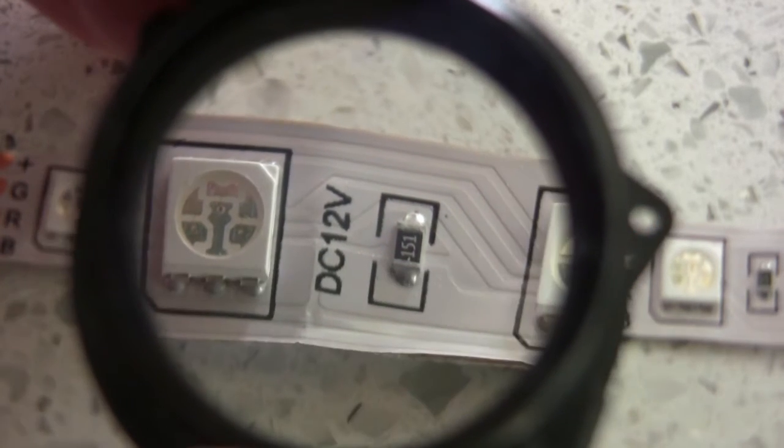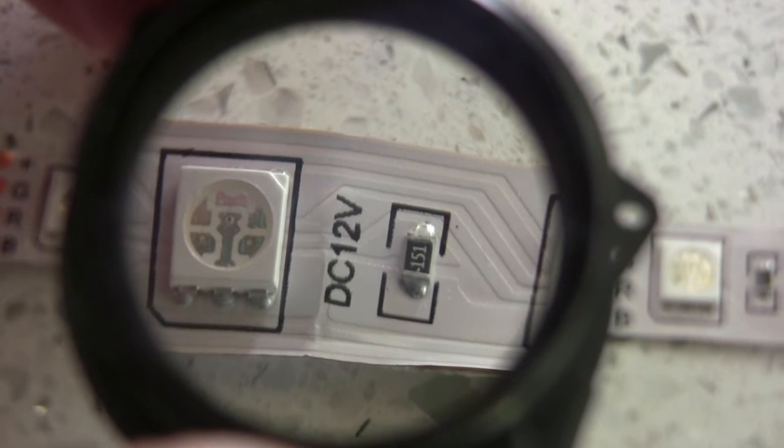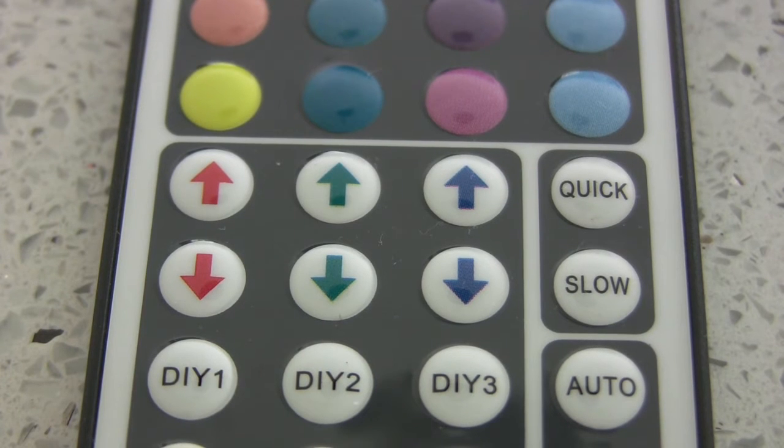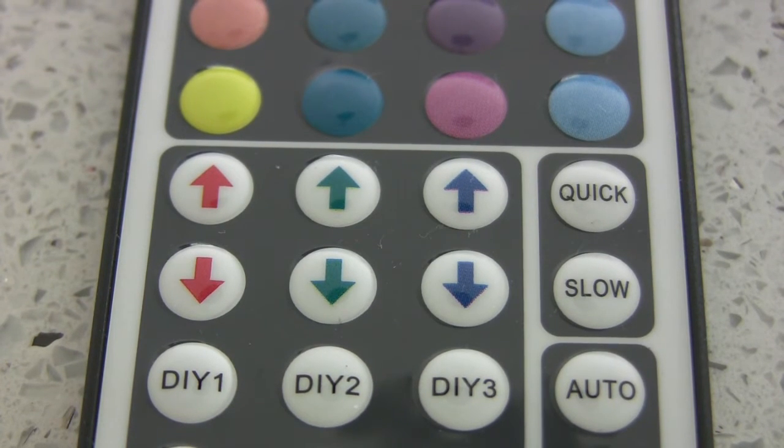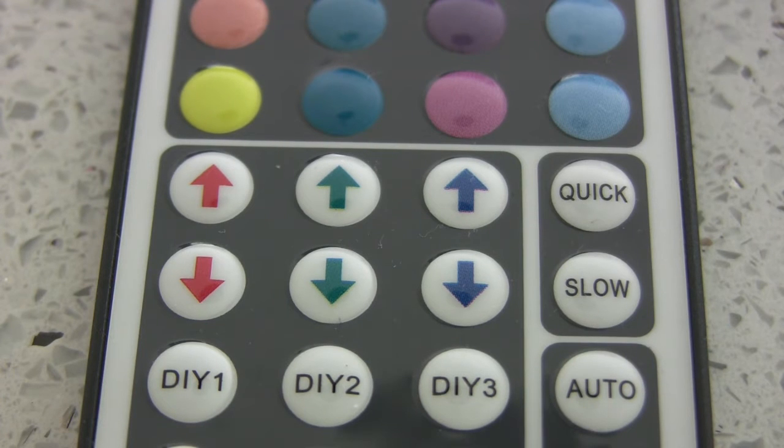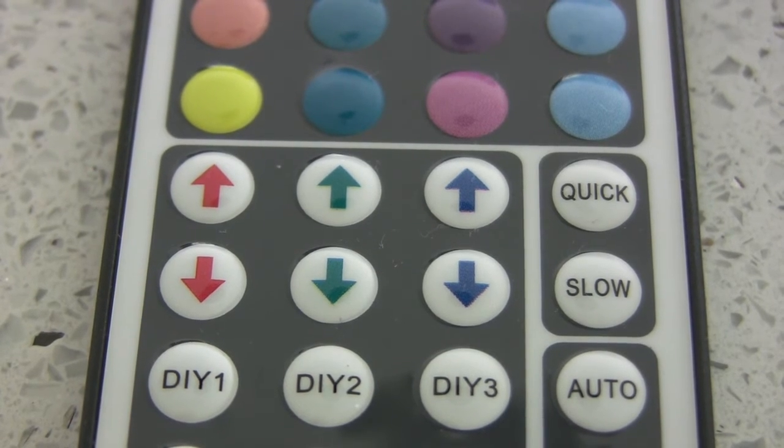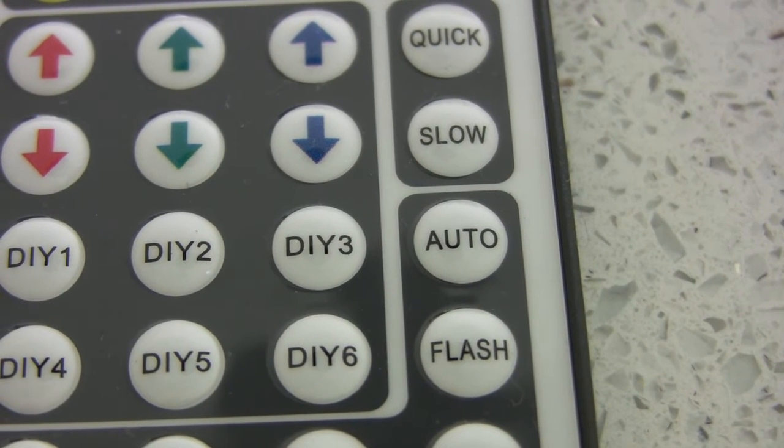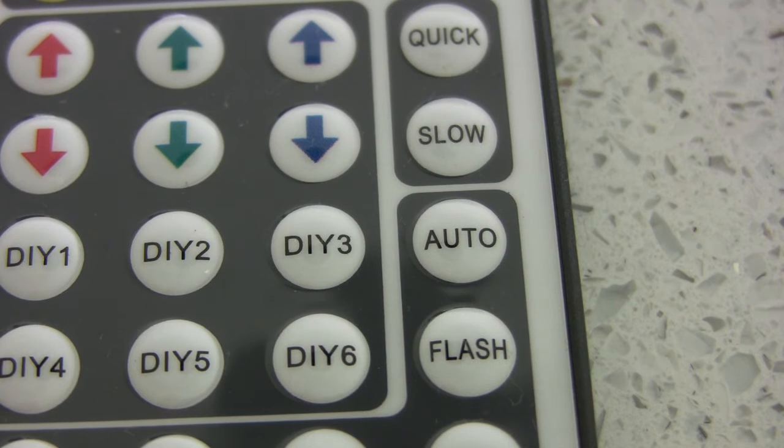There's the small limiting resistor, one for each color obviously, and a different value for each color because each diode requires a different voltage to work. This is a close-up of the remote. I don't propose to go through all the colors because I'm sure you realize you can get virtually any color mix you can imagine. You could also have fades and all sorts of other stuff here—flashing, and basically whatever you wanted to do this is well capable of doing it.